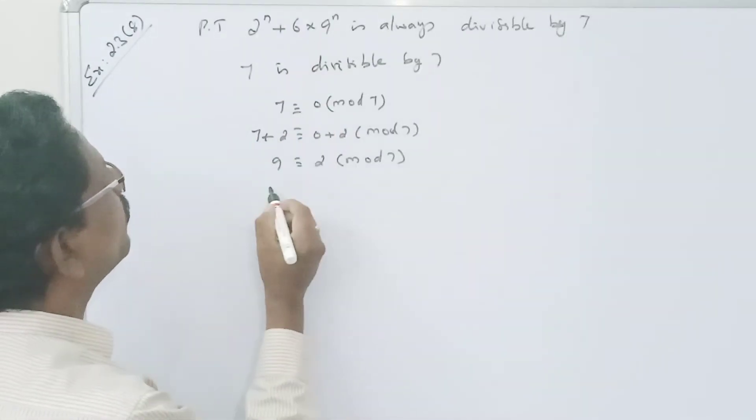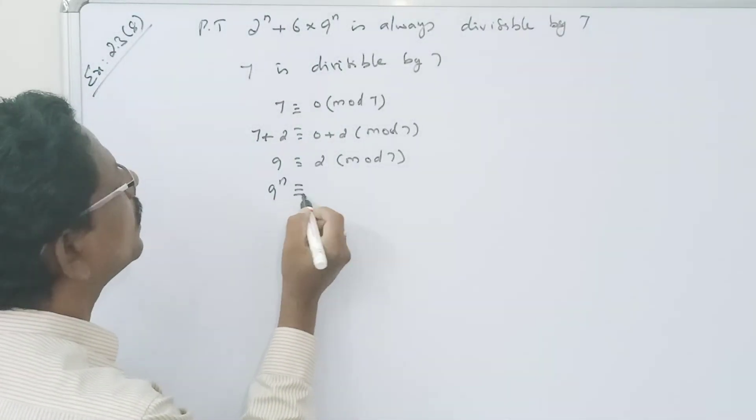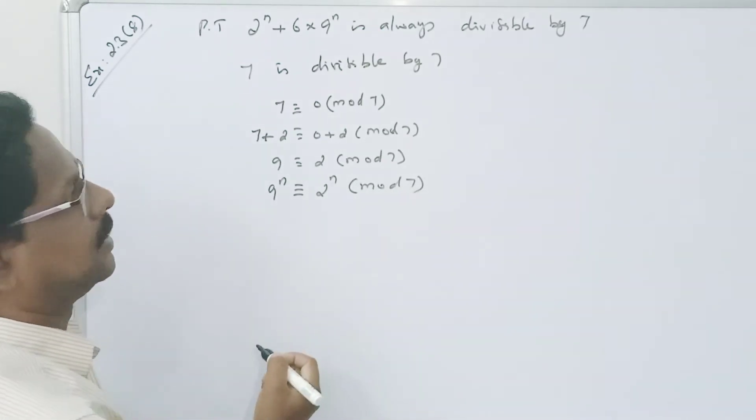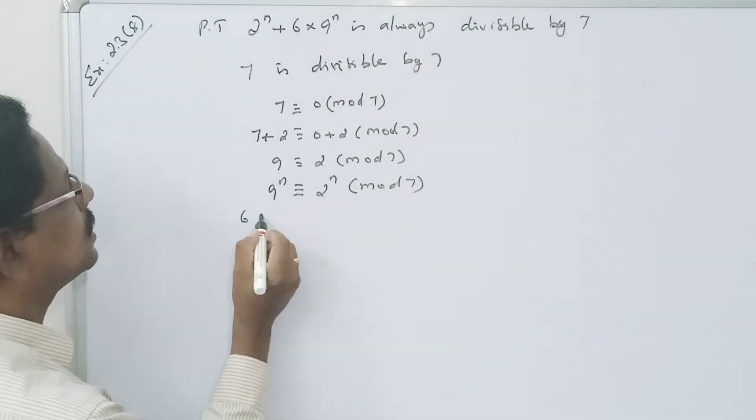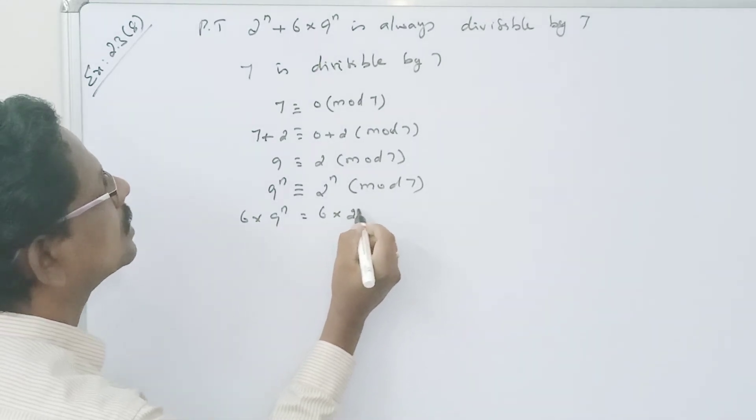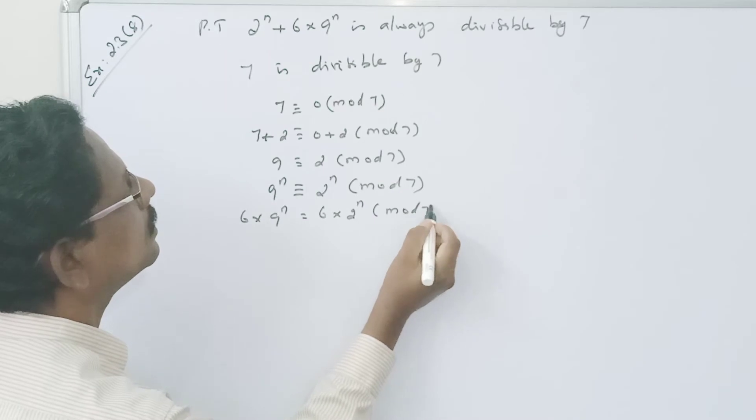9 power n. So 9 power n is congruent to 2 power n mod 7. 6 into 9 power n is equal to 6 into 2 power n mod 7.